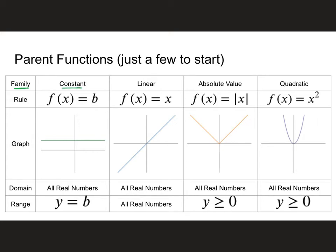So I have the family name — for the first one we have constant, then we have linear, absolute value, and quadratic. Then we have a rule, and our rules are always going to be written in function notation. So for the constant, it's f of x equals b. I'll show you what a graph of it looks like, and then we'll talk about domain and range.